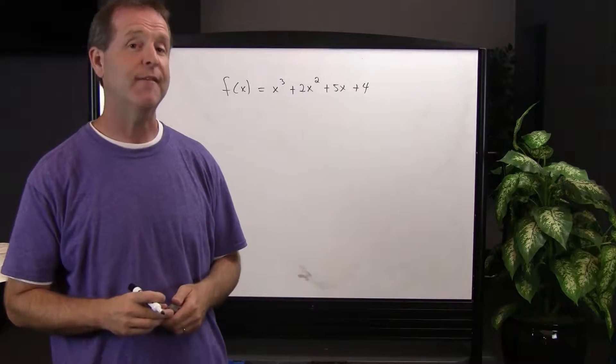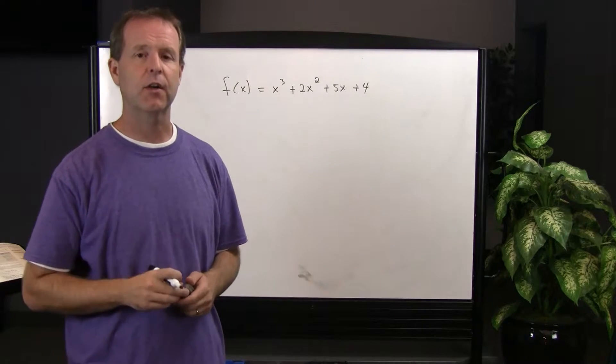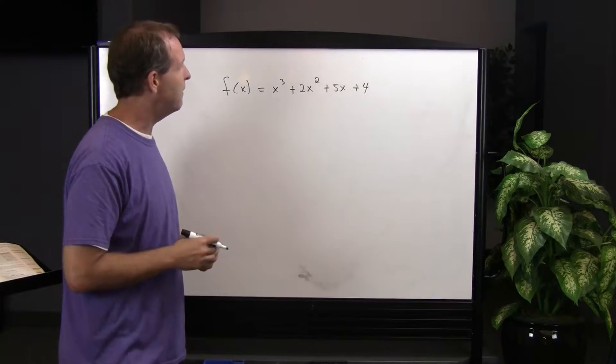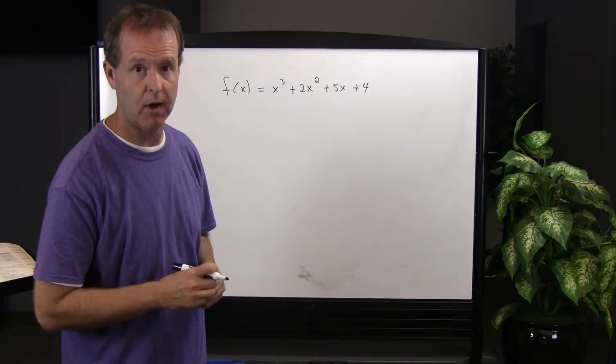So let's look at this function here, see if we can determine what its zeroes are. And by using Descartes' rule of signs, we can find out how many positive real zeroes there are or how many negative real zeroes there are.